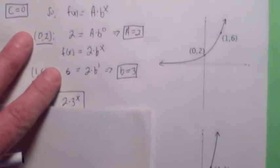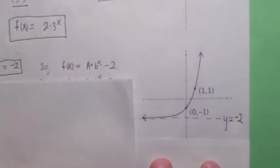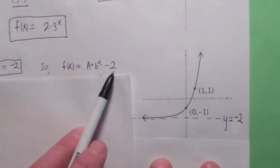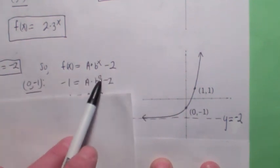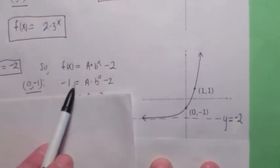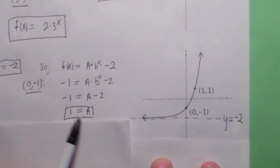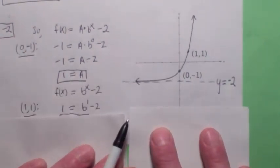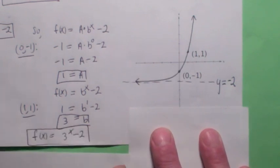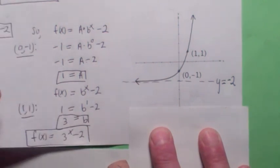Let's do one more. This graph has a horizontal asymptote at negative 2, so c equals negative 2. Now use the y-intercept to find a: when x is 0, y is negative 1. Plug in 0 for x and negative 1 for y. Since b to the 0 is 1, you get negative 1 equals a minus 2, so a equals 1. Then to find b, use another point like (1, 1): plug in 1 for x and 1 for y, getting 1 equals b minus 2, so b equals 3. The equation of the exponential function is found.